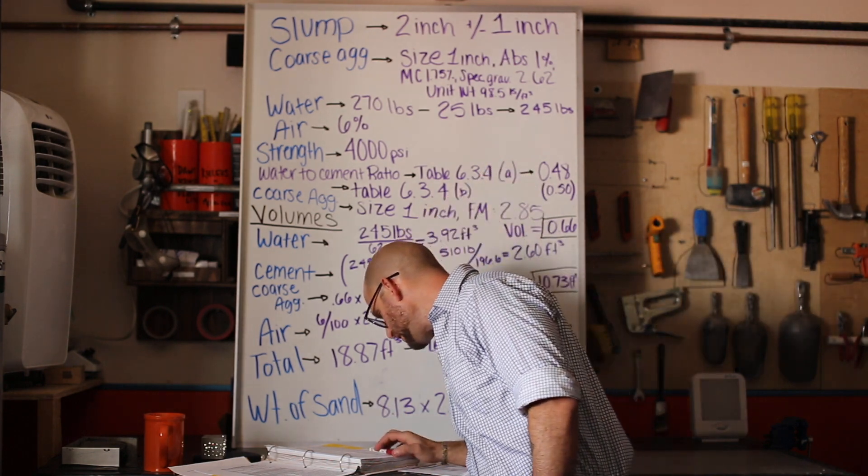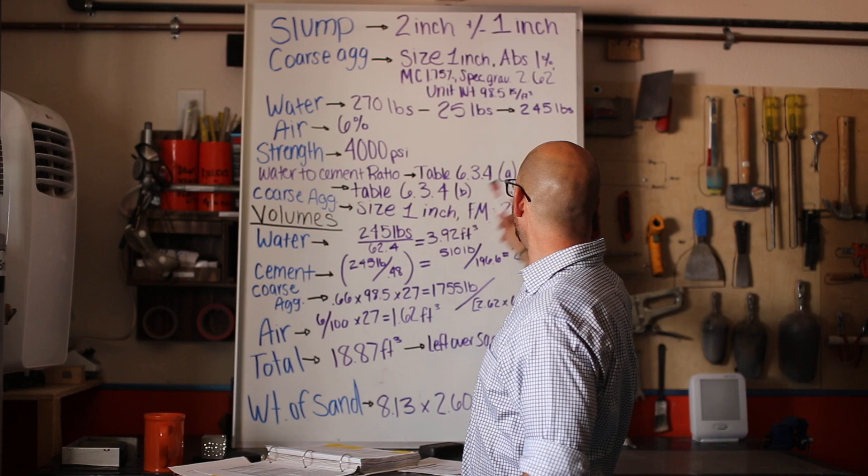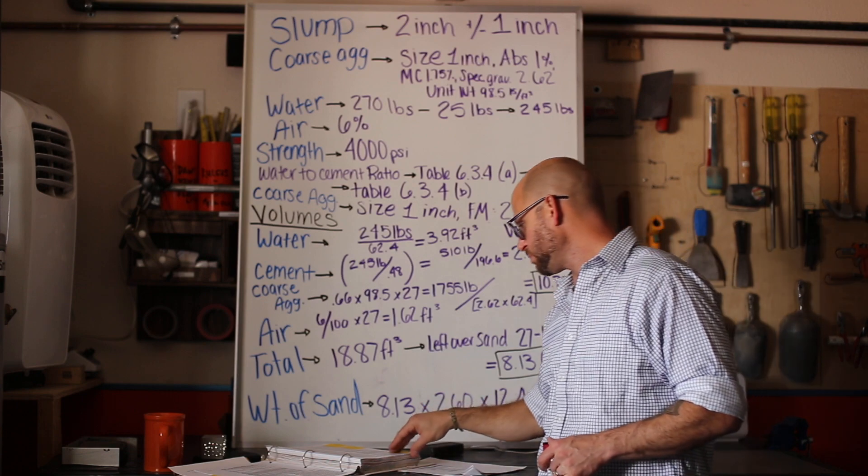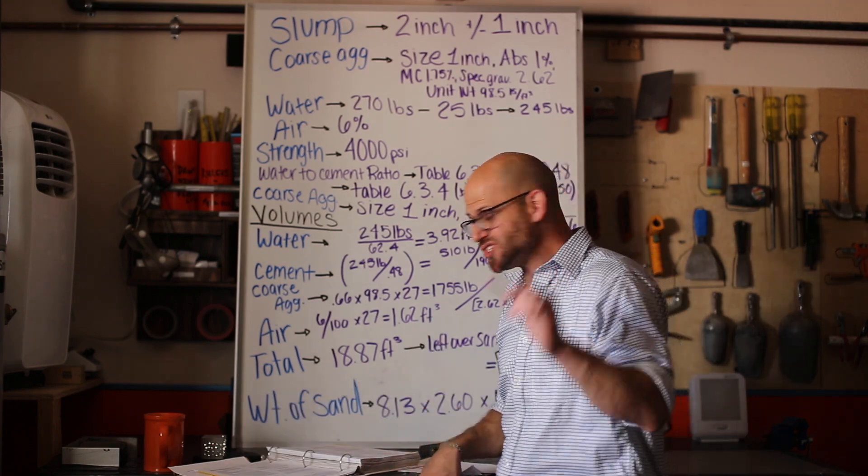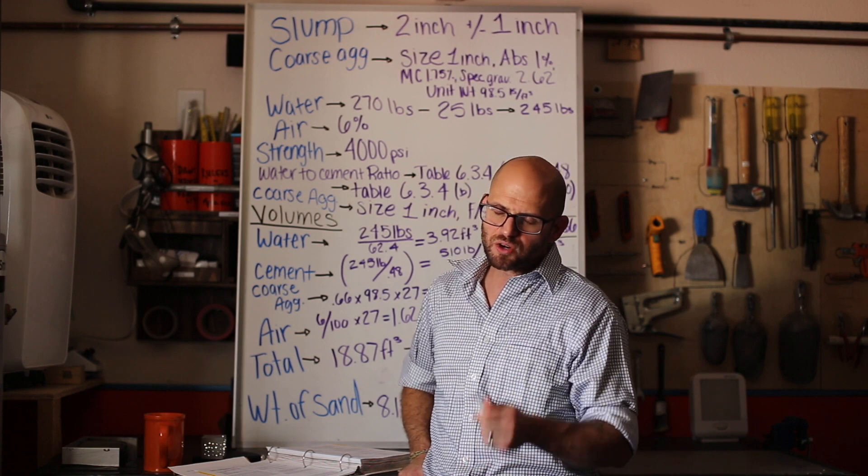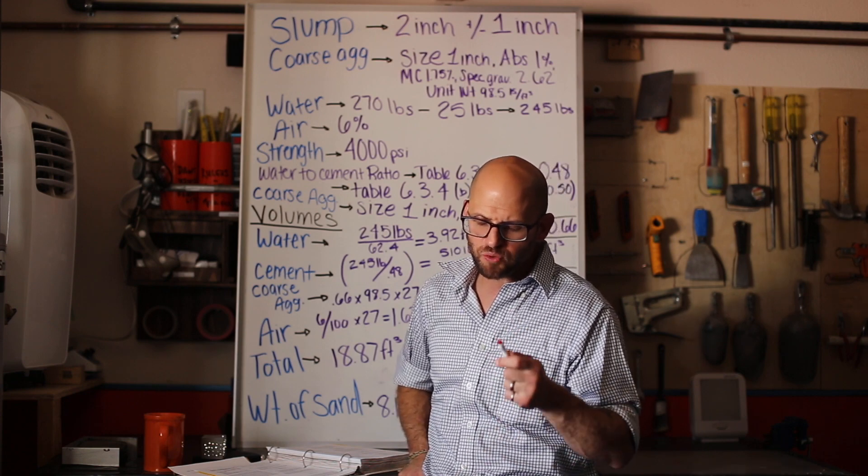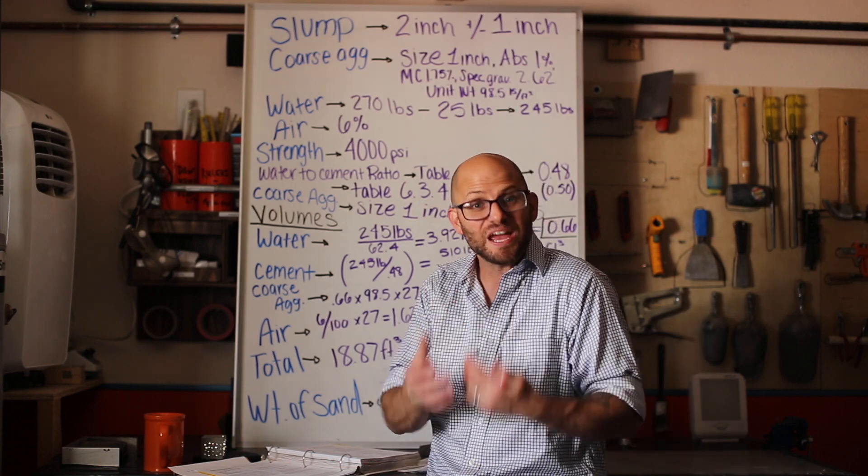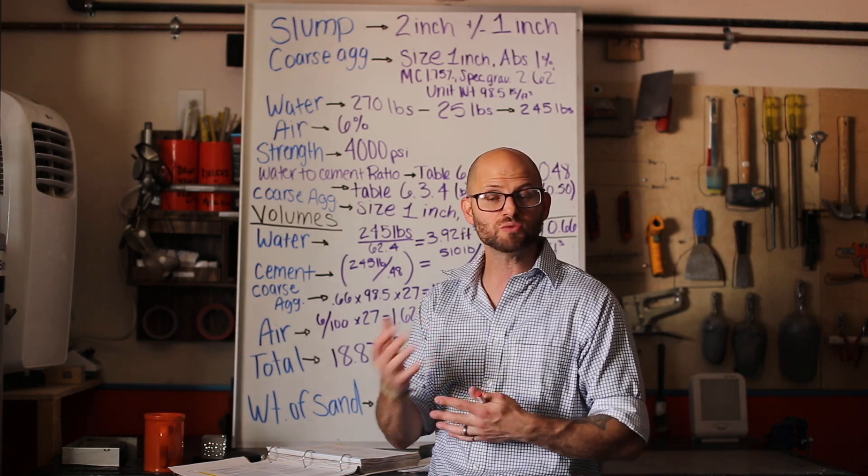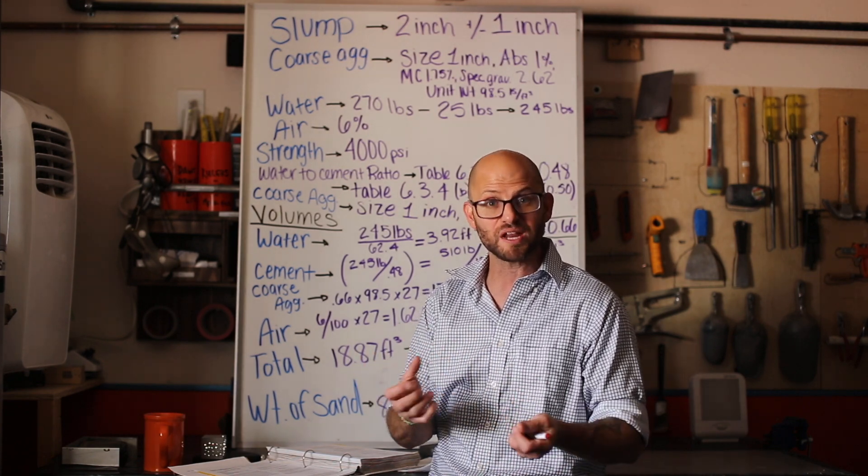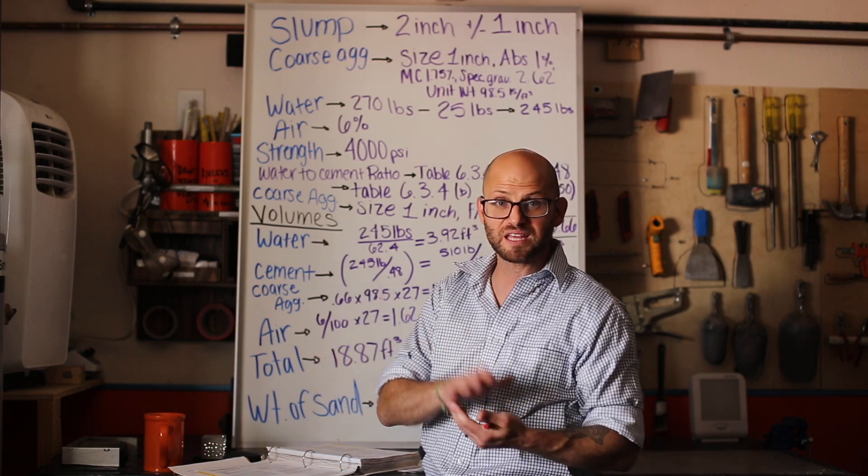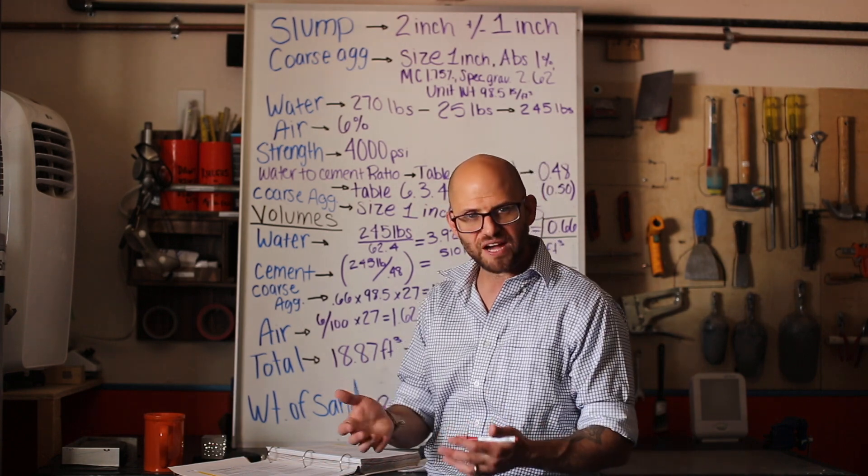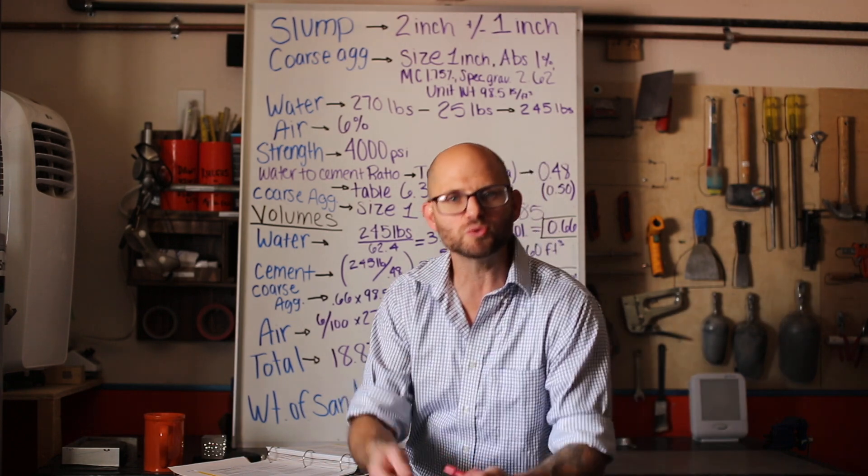What we're looking for right now is our water cementitious ratio. You really haven't done any mathematics yet, you're just choosing from tables. As you can tell, this is not a very difficult process. As long as the end user and the material provider gives us enough information, we can get a nice starting point. So our water cementitious ratio based on an air entrained mix for 4,000 psi is going to be 0.48. That's table 6.3.4a.